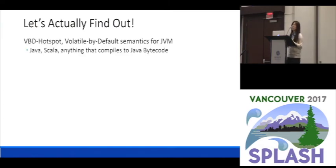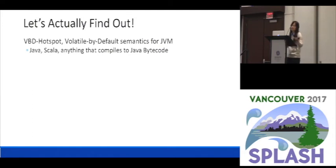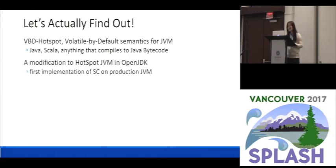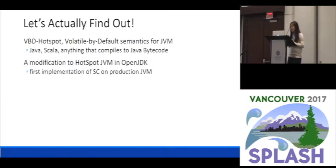We also implemented a JVM — we call it VBD HotSpot — which gives you volatile-by-default semantics for the JVM. Because we implement it at the level of the JVM, we can actually execute any applications compiled into Java bytecode, for example Scala applications as well. This is a modification to the HotSpot JVM in OpenJDK, a widely used JDK today which is also a reference implementation of Java. To the best of our knowledge, this is the first implementation of sequential consistency on a production JVM — a production JVM that has advanced compiler technologies such as dynamic loading and JIT compilation.